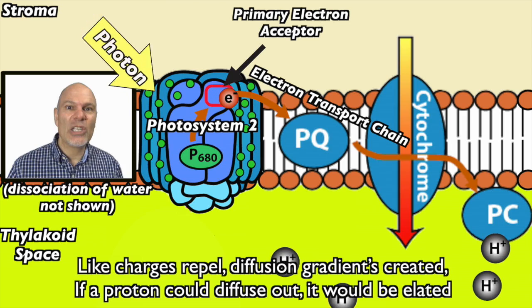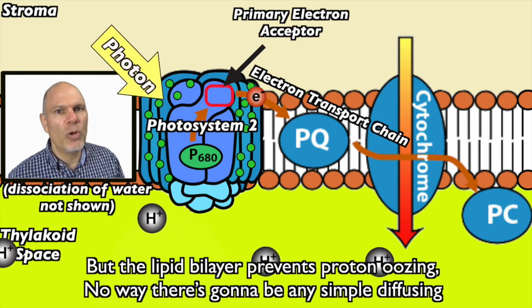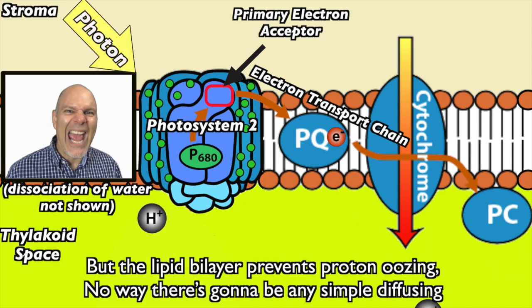Light charges repel, diffusion gradients created. If a proton could diffuse out, it would be elated. But the lipid bilayer prevents proton oozing. No way there's going to be any simple diffusing.